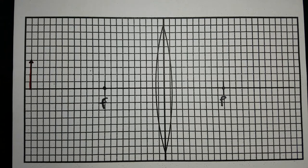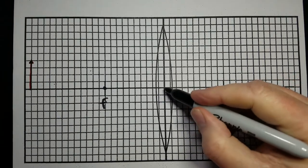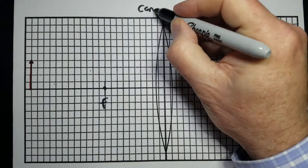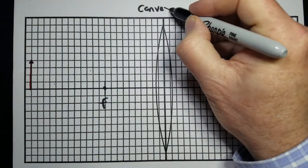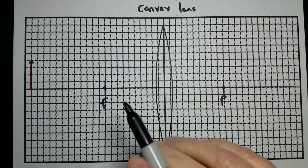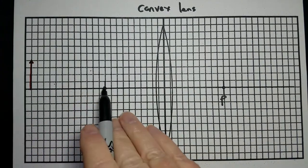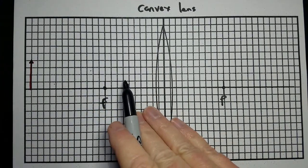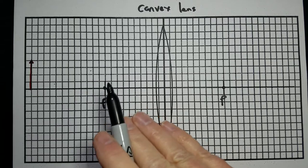Hi, this is Kenley, and we're going to do the ray tracing for a convex lens. A convex lens is thicker in the middle and thinner on the edges, and we're going to do two of them — one where the object is outside the focal length, and one where the object is inside the focal length, so we can compare the two.